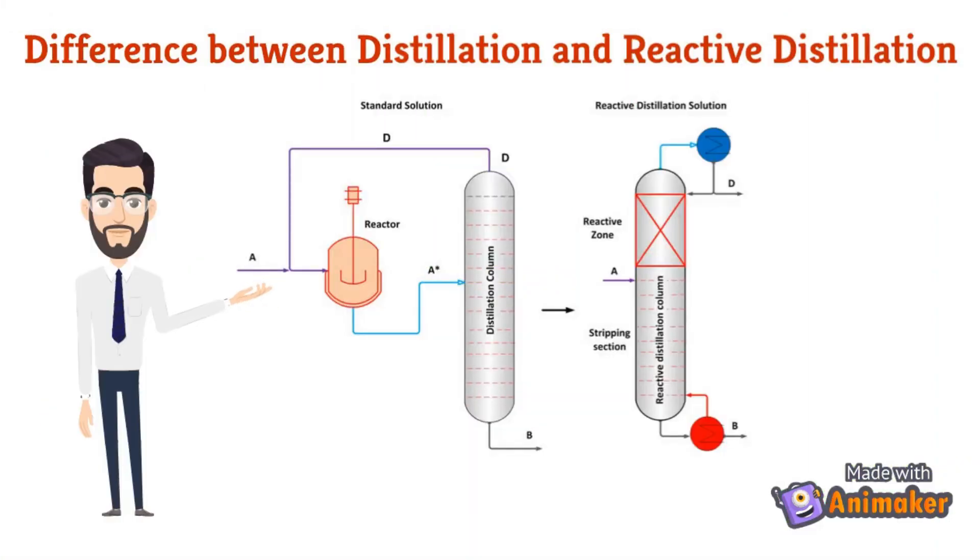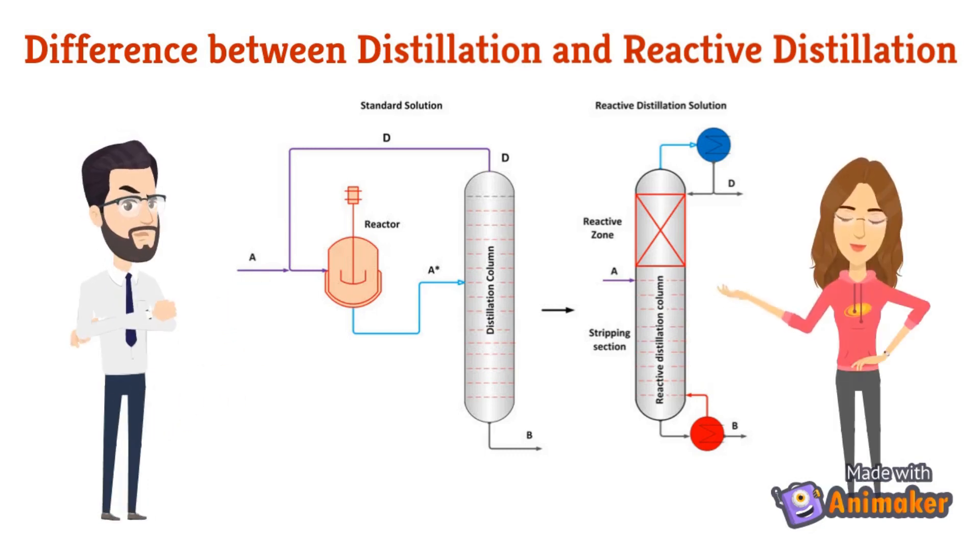In distillation process, segregation and conversion happens based on the input conditions. In reactor distillation, continuous removal of products increases high equilibrium conversion.